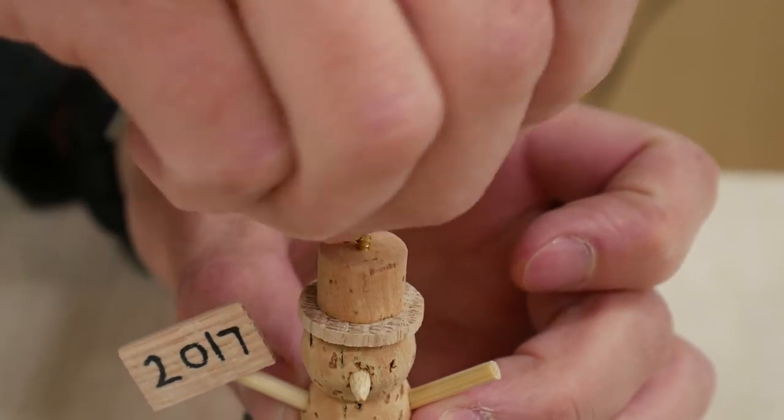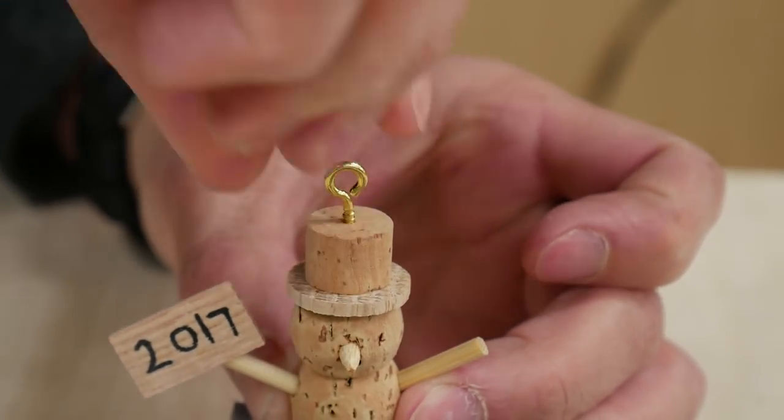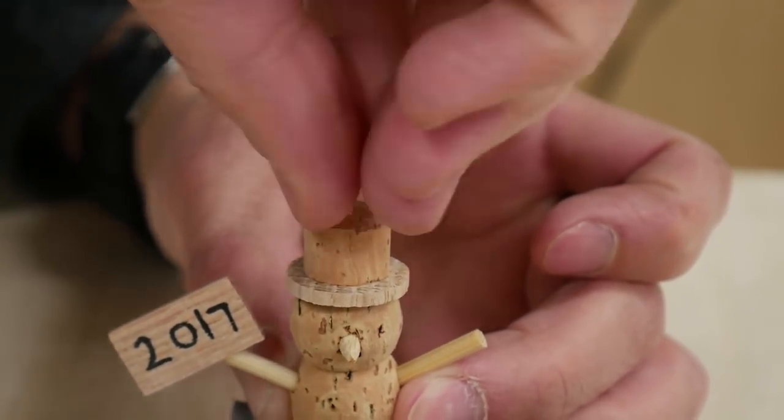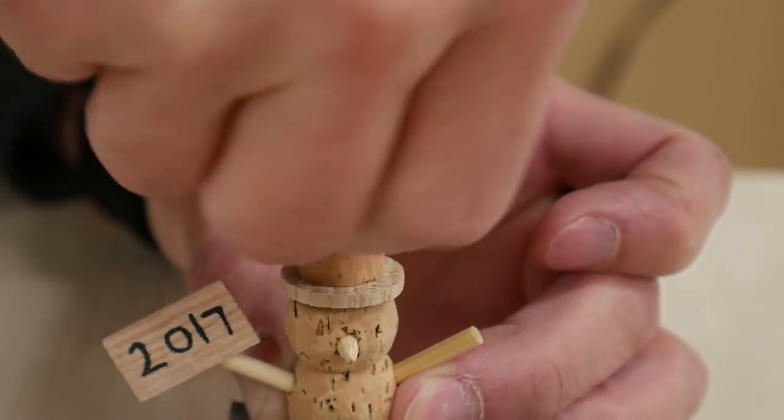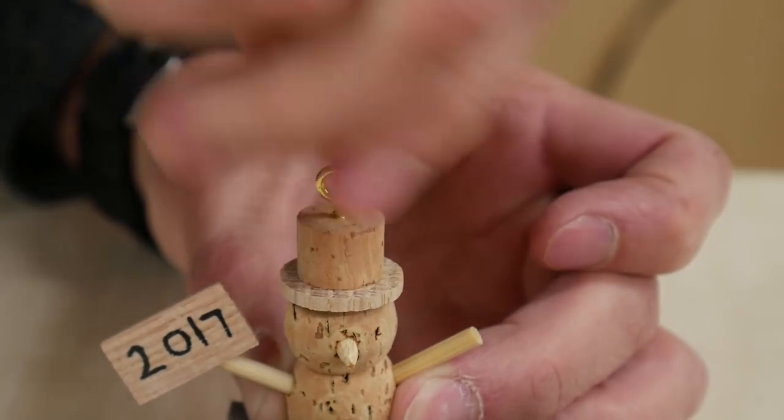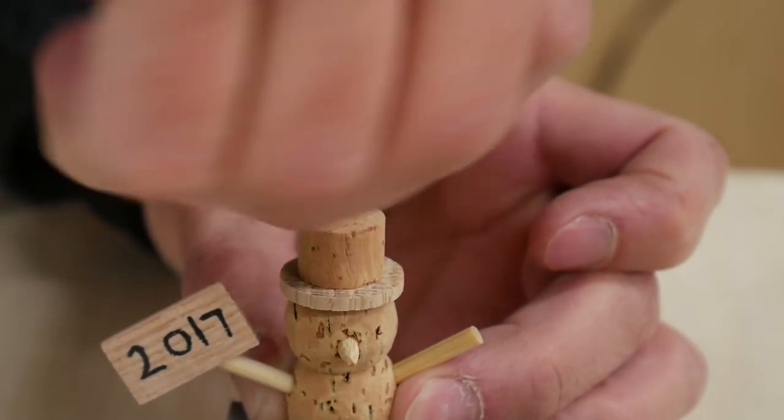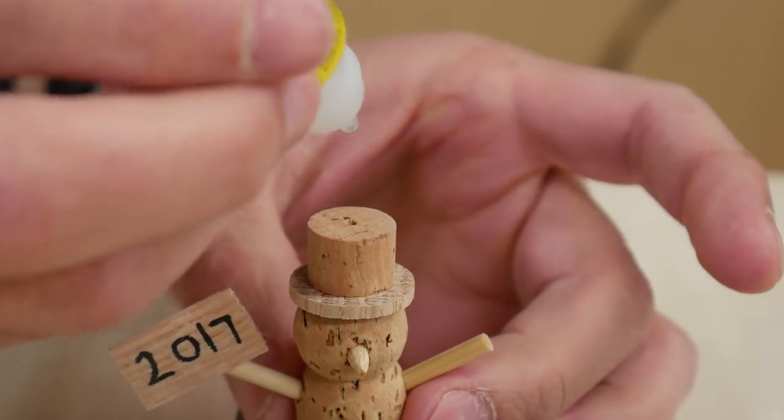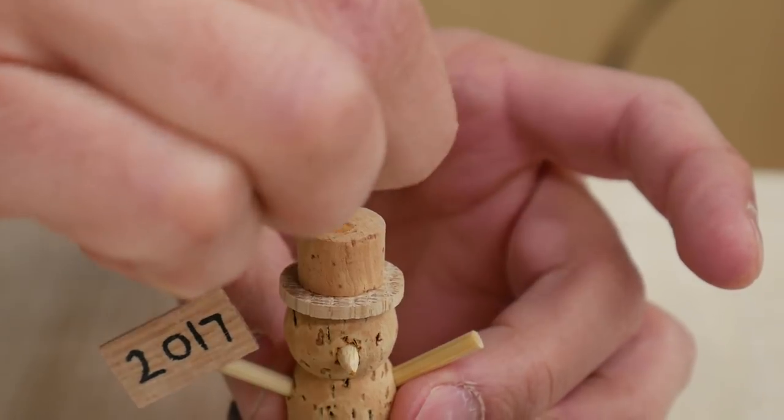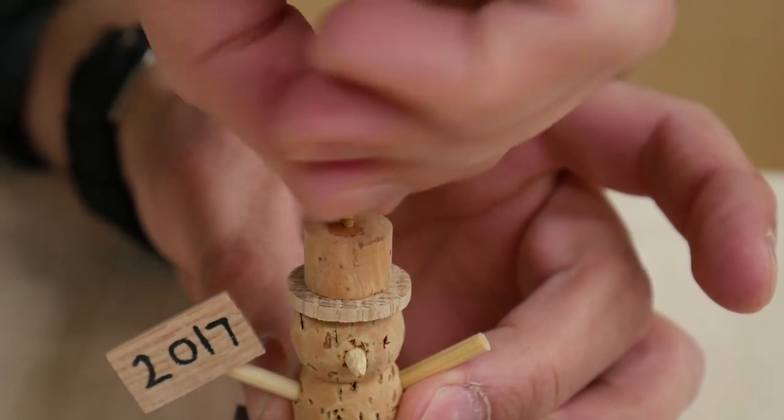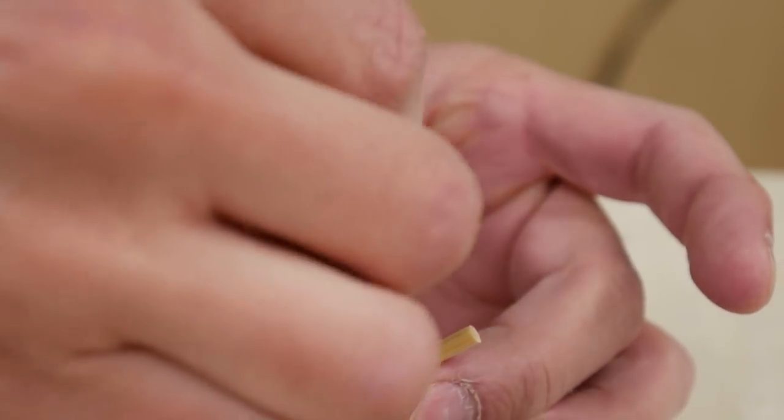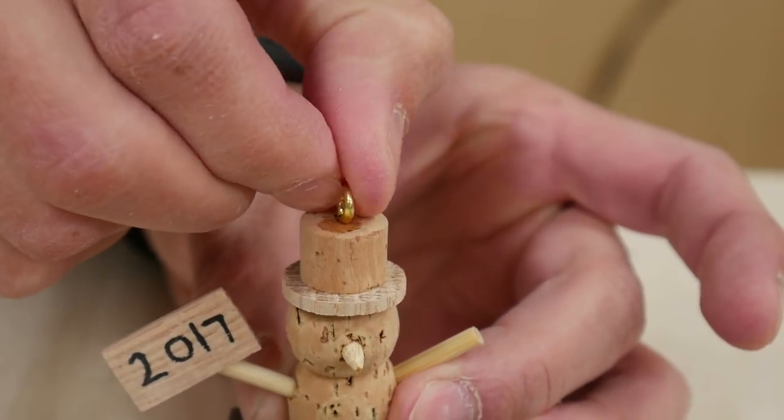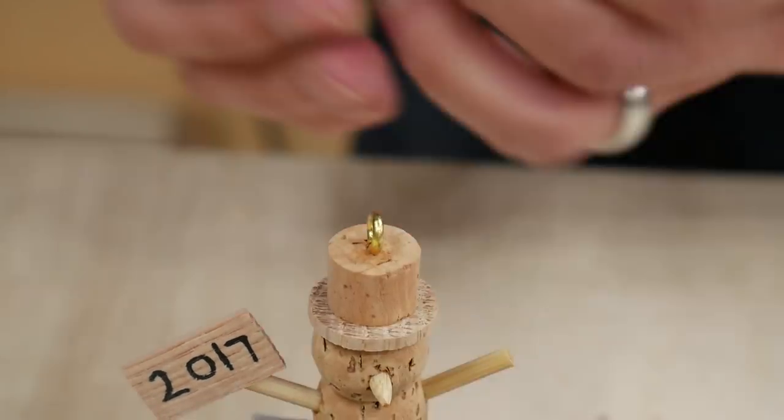When that was dry, I got a very small brass screw eye and screwed it into the top of the hat. Then I unscrewed it and put a drop of CA glue in the hole and screwed the screw eye back into place. When the CA glue was dry, I sanded off the excess with a bit of sandpaper.